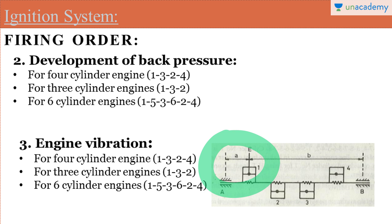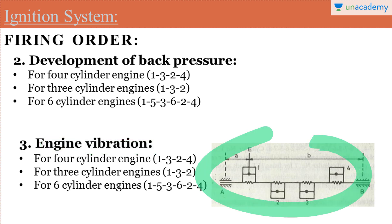To avoid this severe vibration, similar to the other solutions, if we fire the 4th cylinder after the 1st cylinder, the load will be equally distributed on each bearing. After that we can fire the 3rd cylinder, then the 2nd cylinder. The firing should not be in a continuous way to avoid the engine vibration problem, and this firing order principle is also applicable for more than four cylinders.